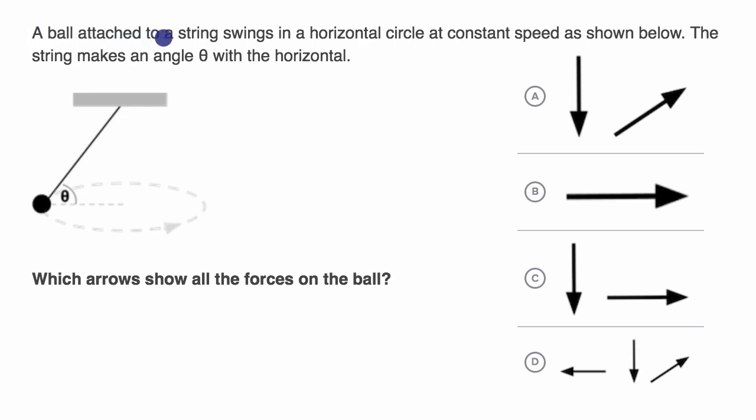We're told that a ball attached to a string swings in a horizontal circle at constant speed as shown below. The string makes an angle theta with the horizontal. Which arrows show all the forces on the ball? So pause this video and see if you can figure that out.